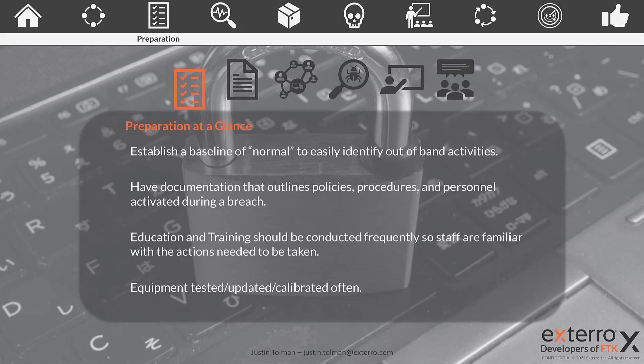The preparation phase also deals with education and training. We need to be training our people. Sometimes freeing up budget for training can be difficult; however, it is super important with the rate at which vulnerabilities are being found, breaches are happening, and bad actors are educating themselves and staying at the edge of technology. On the defense, we also need to be doing the same. We need to have our equipment tested, updated, and calibrated. There would be nothing worse than having a breach thinking you have the right equipment and it's not working correctly.